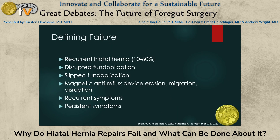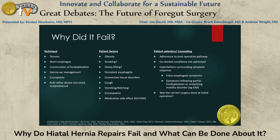Defining failure can include a recurrent hernia, a disrupted or tight fundoplication, a slip fundoplication, anti-reflux device migration, disruption or erosion, as well as recurrent, persistent, or new symptoms. Recurrence rates surrounding hiatal hernia repair range from 10 to 60 percent, with paraesophageal hernia recurrence rates exceeding 50 percent. There is positive evidence showing what factors lead to recurrence, but the data are heterogeneous, often with short-term follow-up, high dropout rates, and limited objective data.